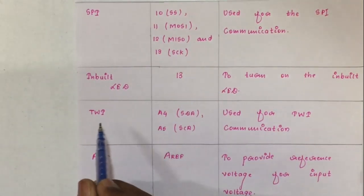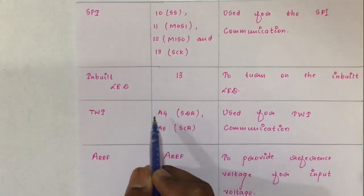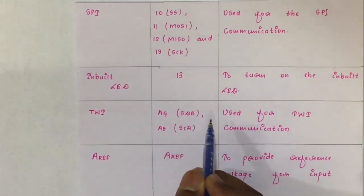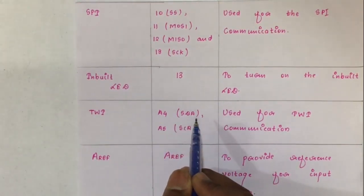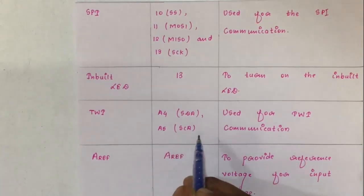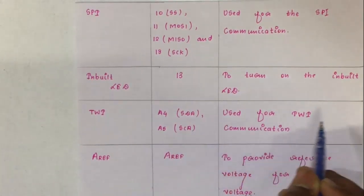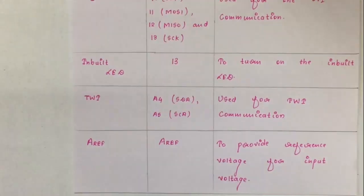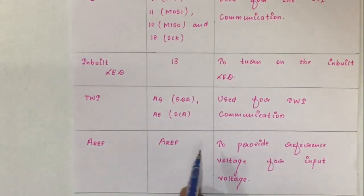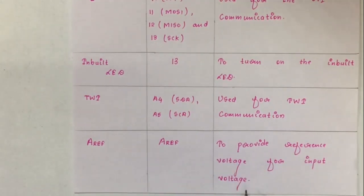TWI — two wire interface. There are two TWI pins. First is A4 which is SDA — serial data — and the second is A5 which is SCL — serial clock line. These are used for TWI communication. And the last pin is AREF, also called the reference pin, which is used to provide a reference voltage for input voltage.